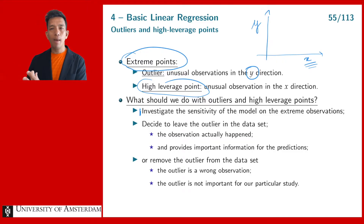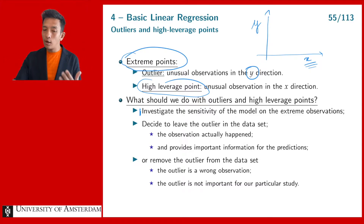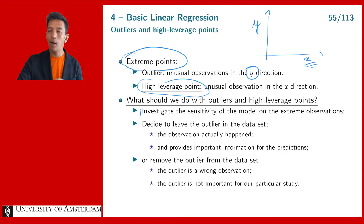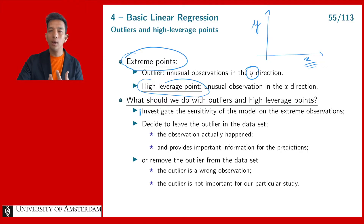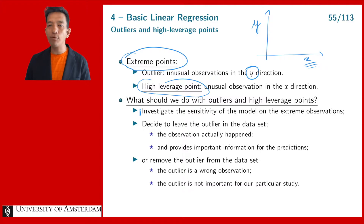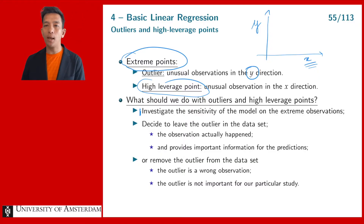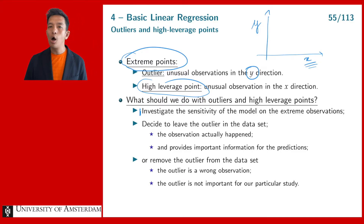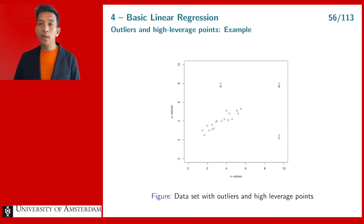Beyond the keep-or-remove question, you also want to investigate the effect of your choice on the final results. Therefore, it is sometimes a good idea to run your analysis first with the outliers and high leverage points, and then without them. If your conclusions are not highly affected by that choice, you can say it does not have a major impact. But if removing or keeping an outlier leads to very different results — for example, in one case you should buy and in another you should sell a stock — then you need to be very careful.